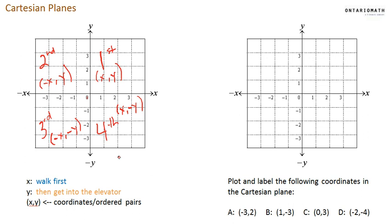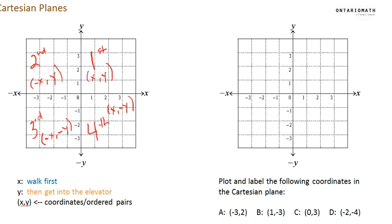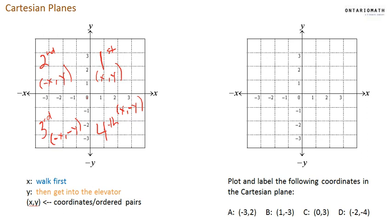So don't forget, I watched Walking Dead last night so I'm in a bit of a zombie mood. You have to walk on the x-axis first, and then you get into the elevator and the zombie goes up or down. X-axis, walk across first, then y-axis, go up or down the elevator. That's how you remember: x is first, walk across, and y is elevator.